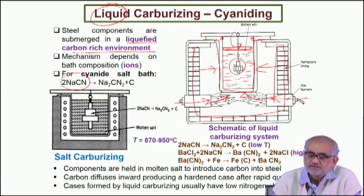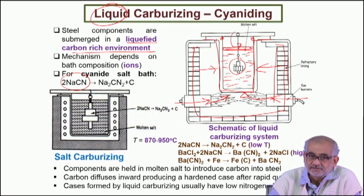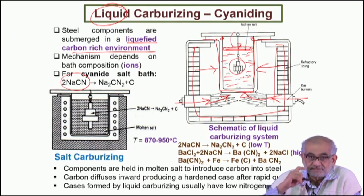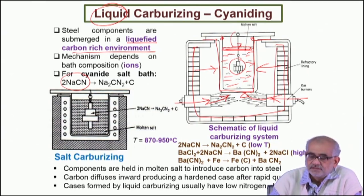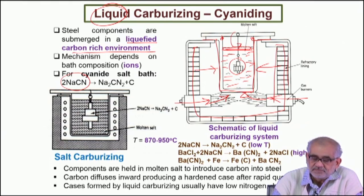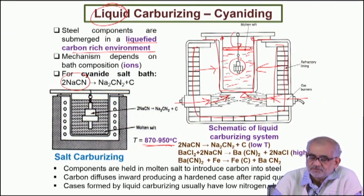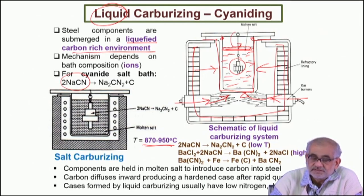Whenever we deal with salt bath processes, once the salt is molten we generally would not allow it to come to room temperature, because every time that happens there is significant dissociation and the composition can change significantly. Once on, we always maintain it in the molten state, though the temperature can be reduced to perhaps 300–400°C where the salt will still remain molten.